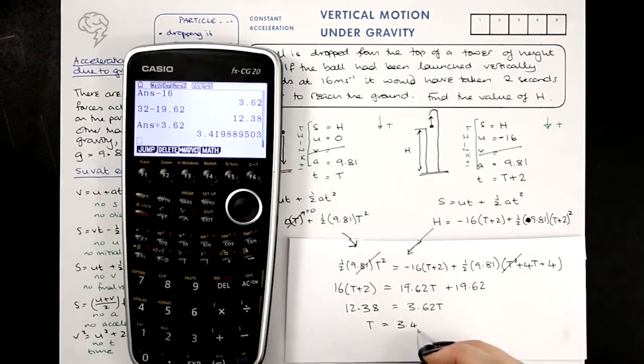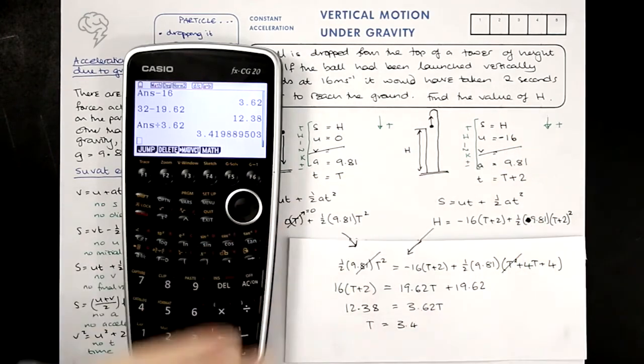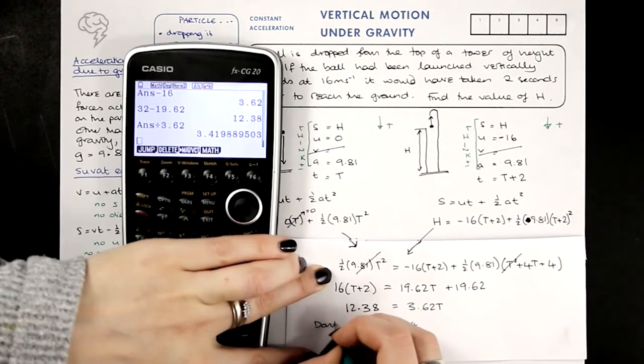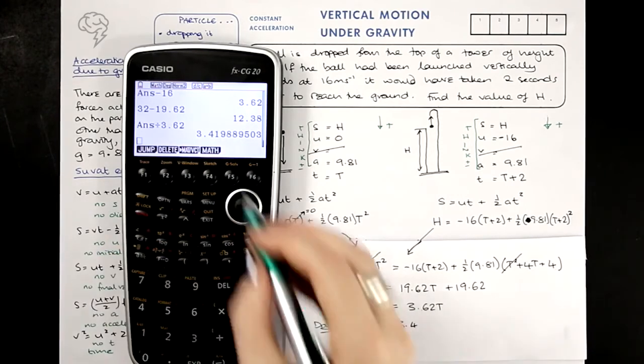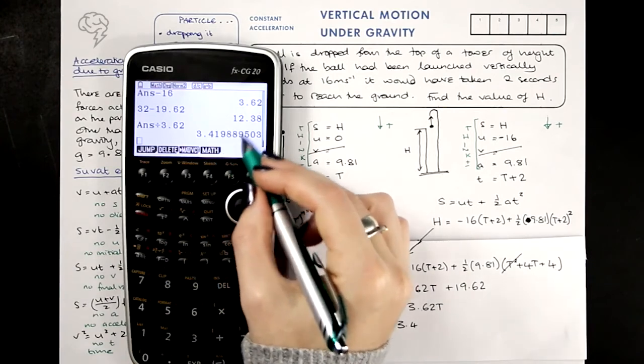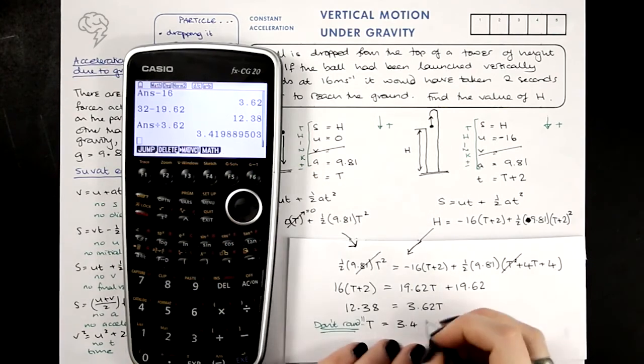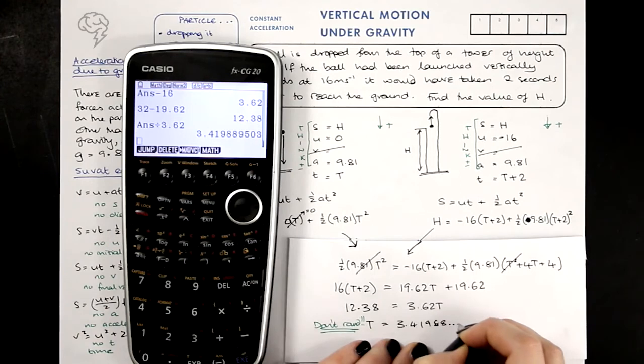Now I'm not actually going to round this, because this isn't what I'm after, I'm after H. So don't round, don't prematurely round, there's no need. T is not what we were after, so I'm going to use 41988 blah blah blah.